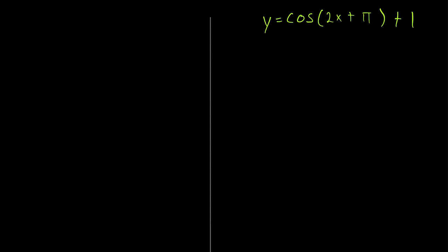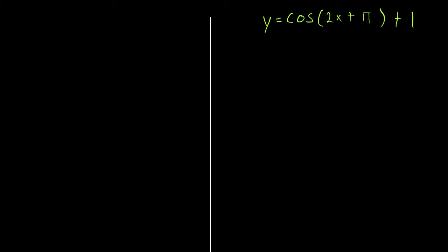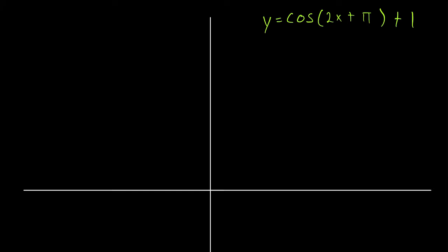Next we've got a cosine function. I notice a plus 1 at the end — it'll be moved up one unit — and a negative phase shift. So I'll draw the x-axis a bit low for more room above. Step one: the midline is y equals 1. Step two: the amplitude — check that the coefficient of x is positive, which it is, so we don't have to change anything. The amplitude is positive 1. Note that in a cosine function, a negative coefficient of x doesn't affect the amplitude, but it's good practice to handle it anyway.